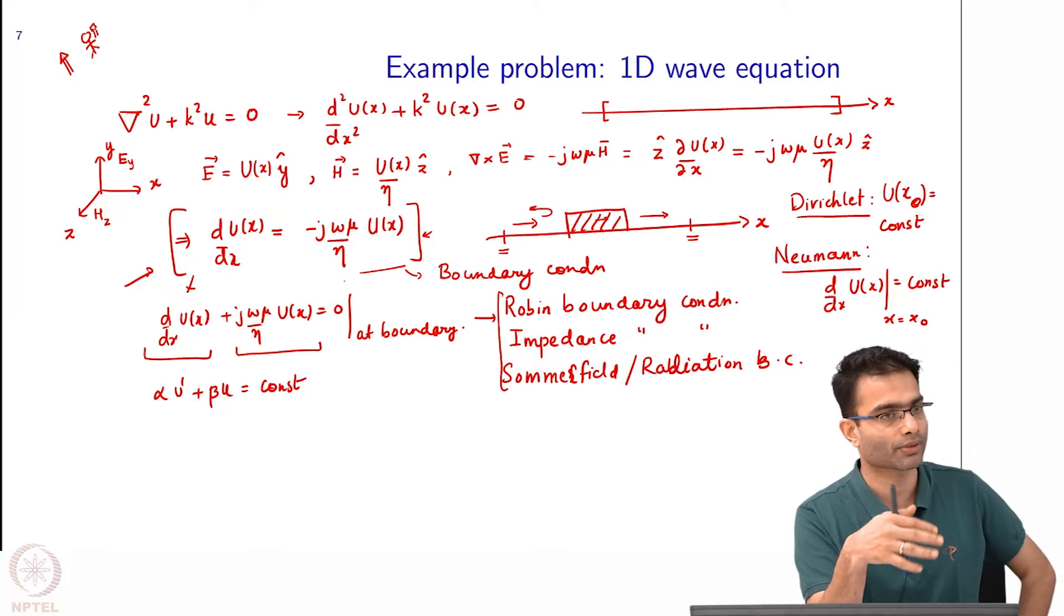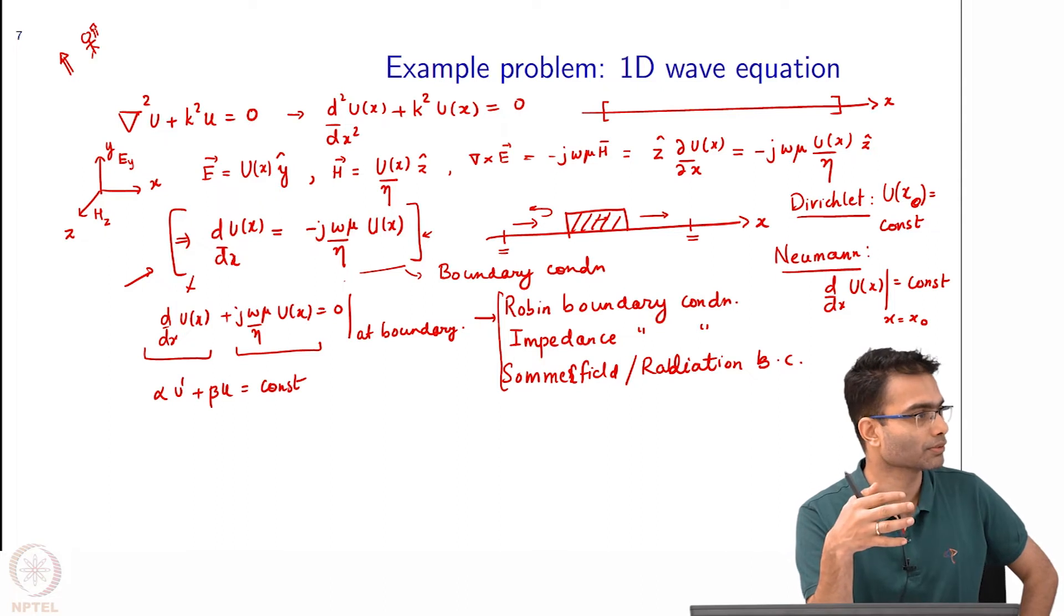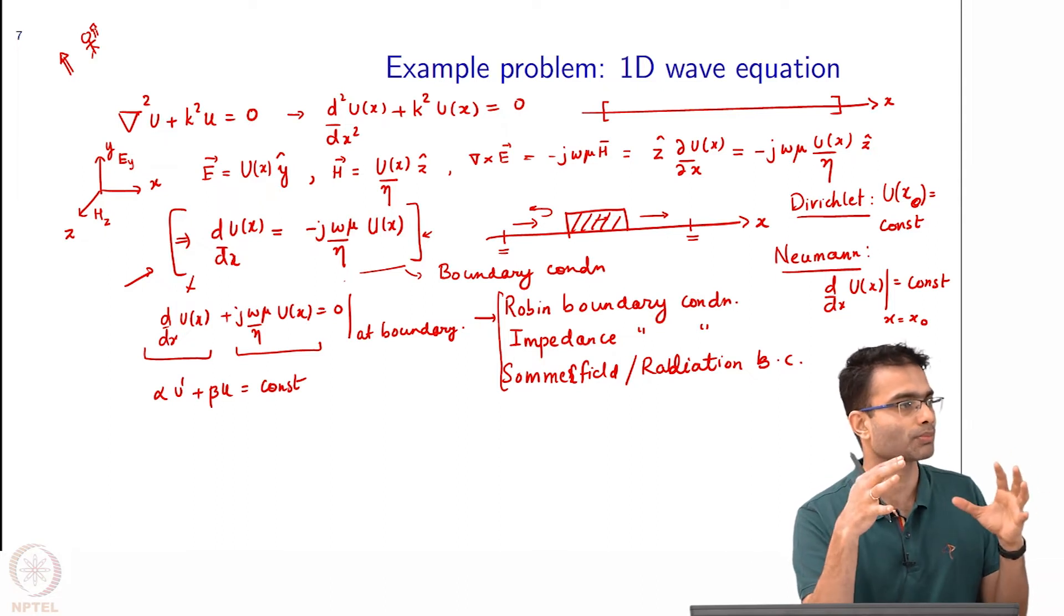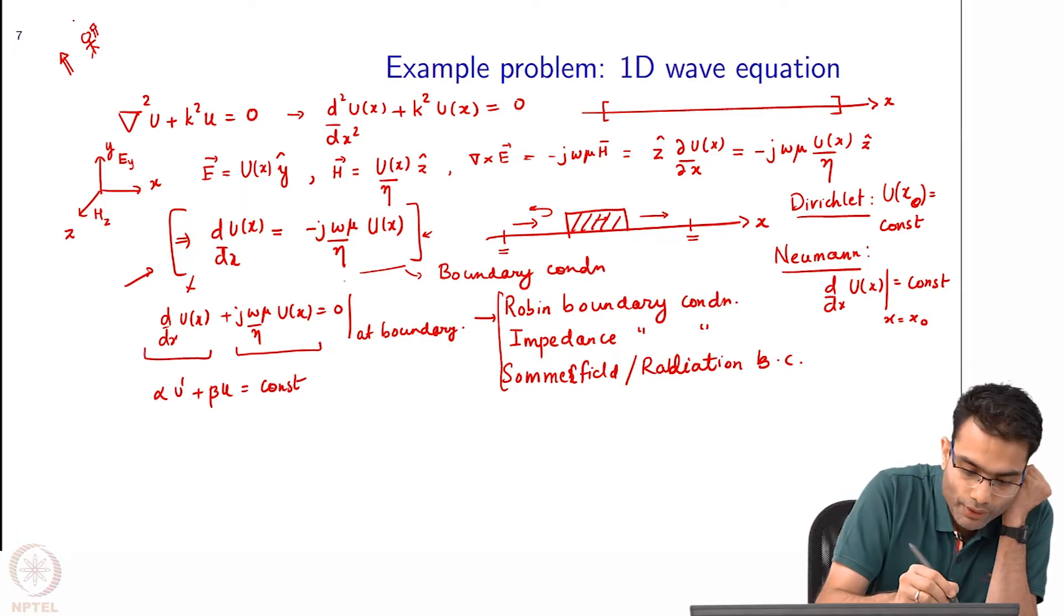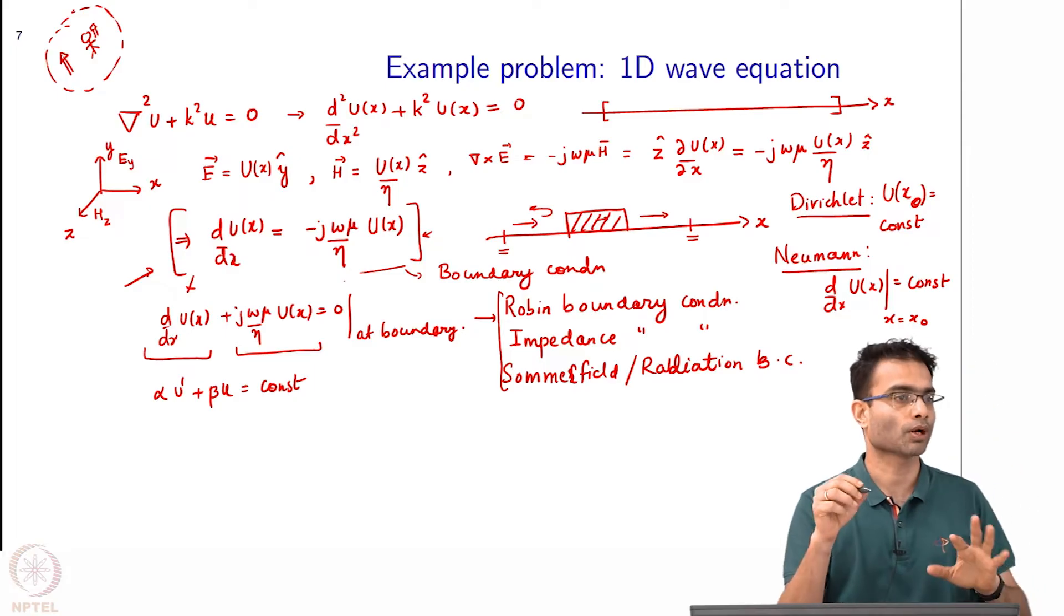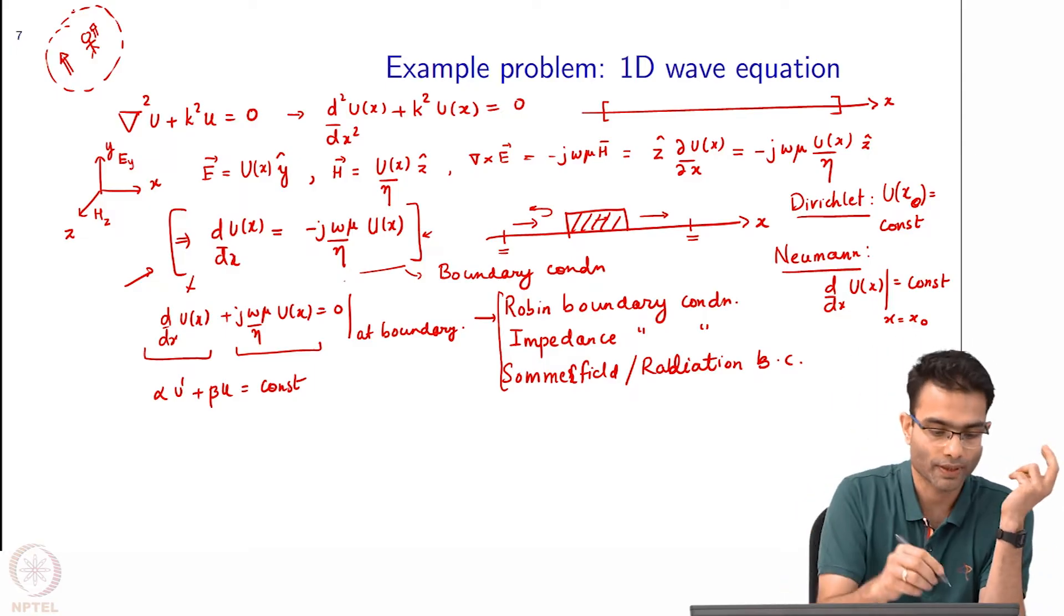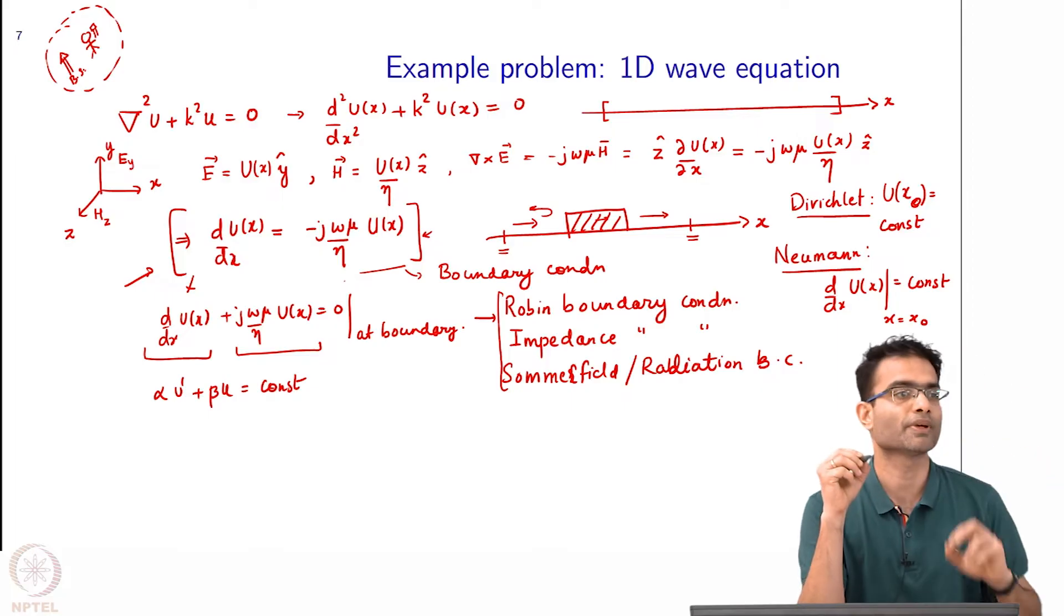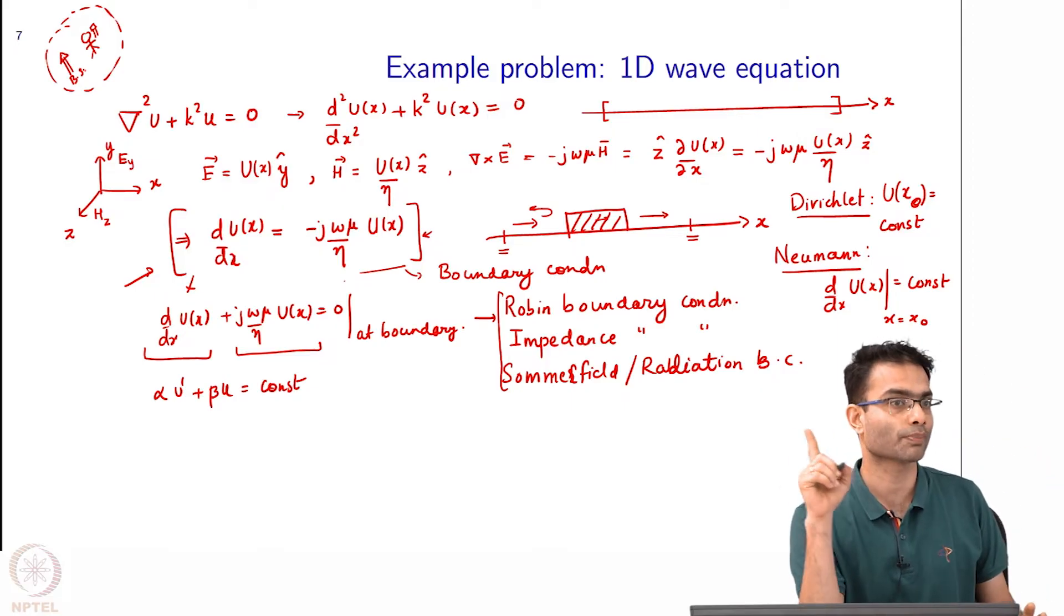When you go to try to solve this problem in a simulation, you have to end the simulation boundary somewhere. You can, for example, say that this is going to be my simulation boundary. In this problem you want to study two things: one is how close should you be to the base station to be safe. We know that base stations, the towers, they put out a lot of power.